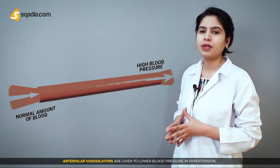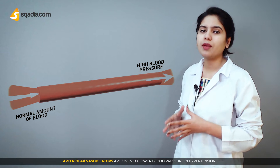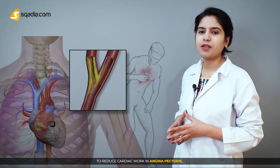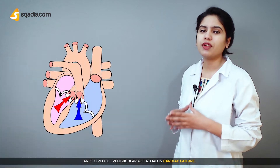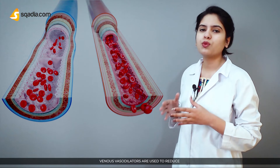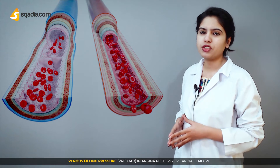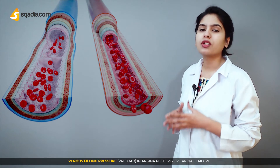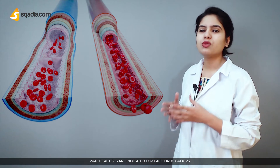Arterial vasodilators are given to lower blood pressure in hypertension, to reduce cardiac work in angina pectoris, and to reduce the vascular afterload in cardiac failure. Venous vasodilators are used to reduce venous filling pressure and preload in angina pectoris or cardiac failure. Practical uses are indicated for each drug group.